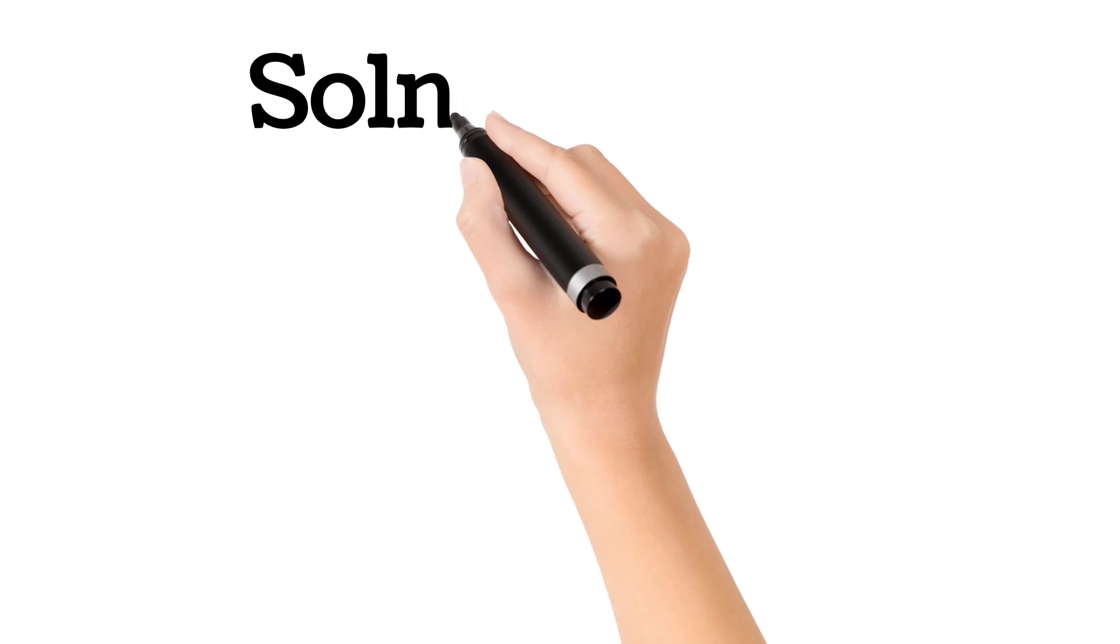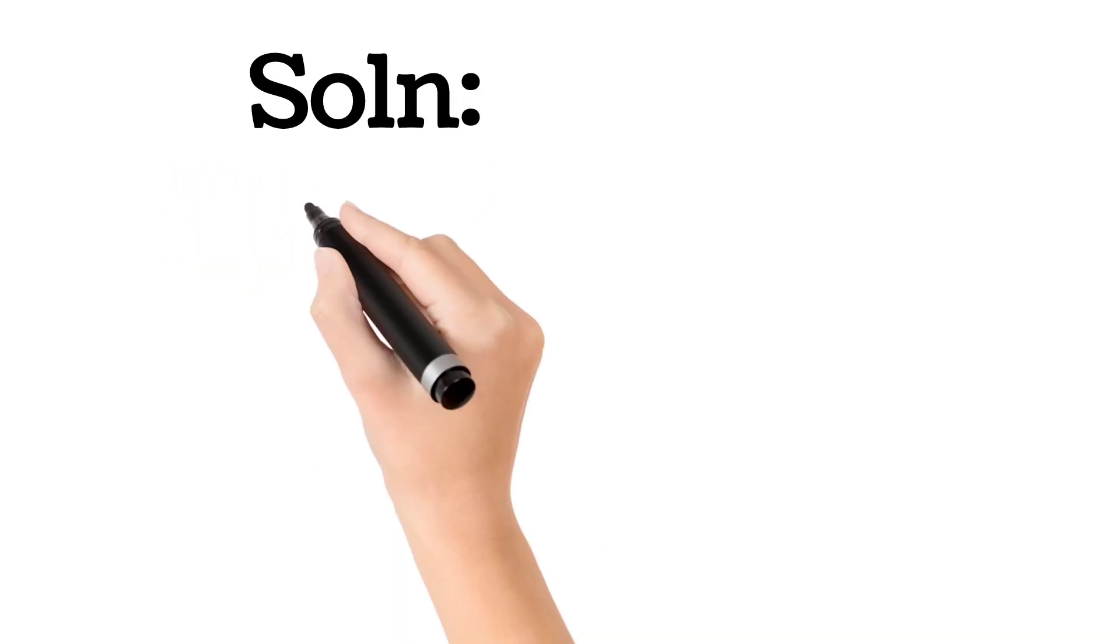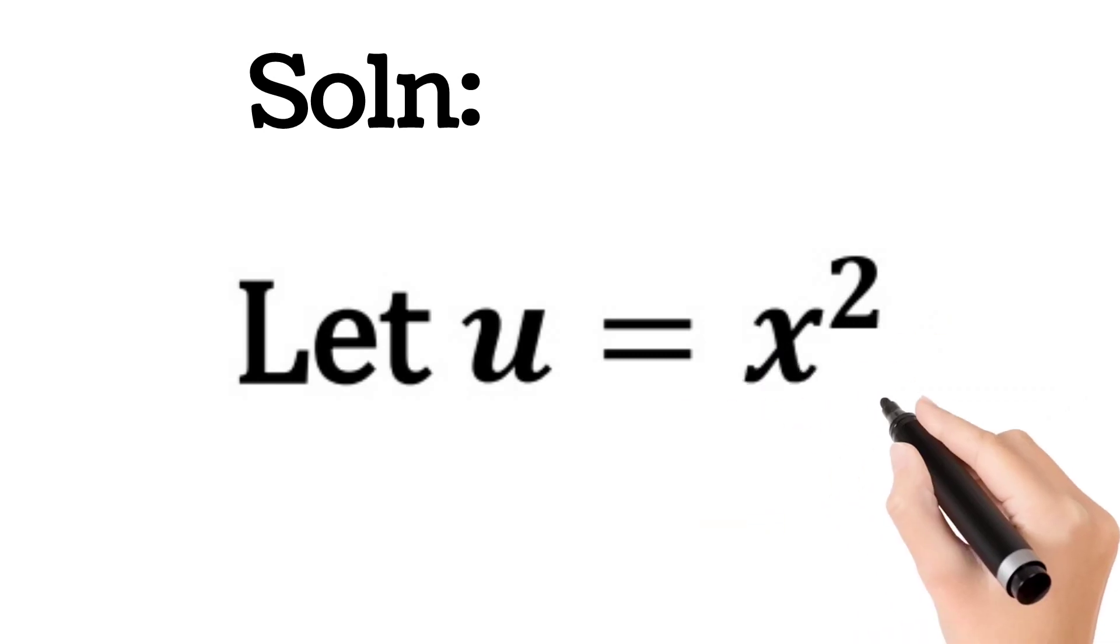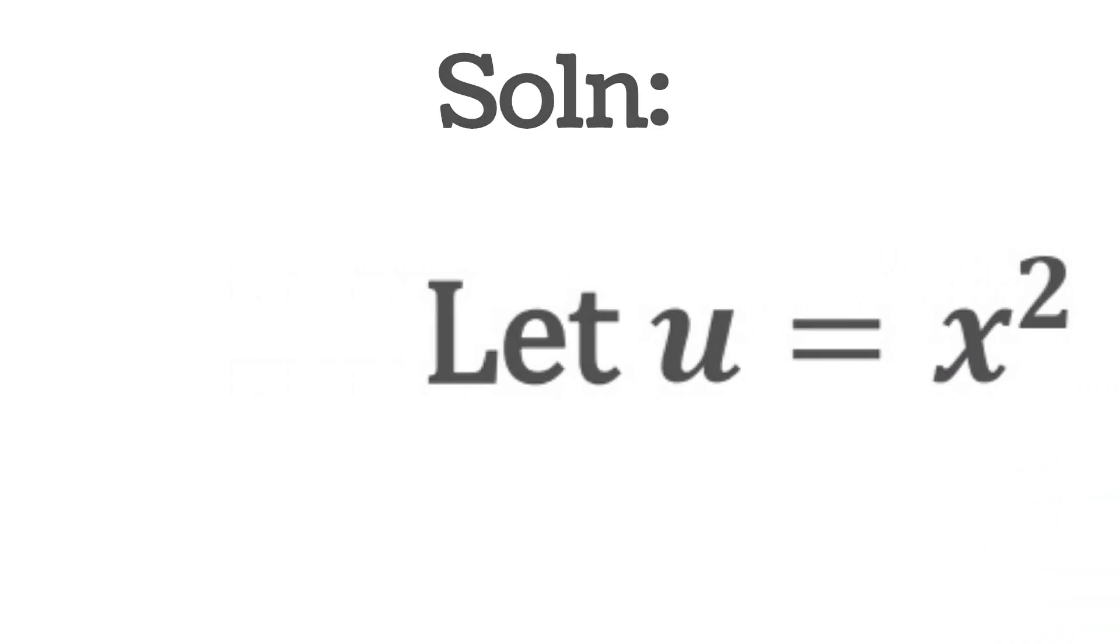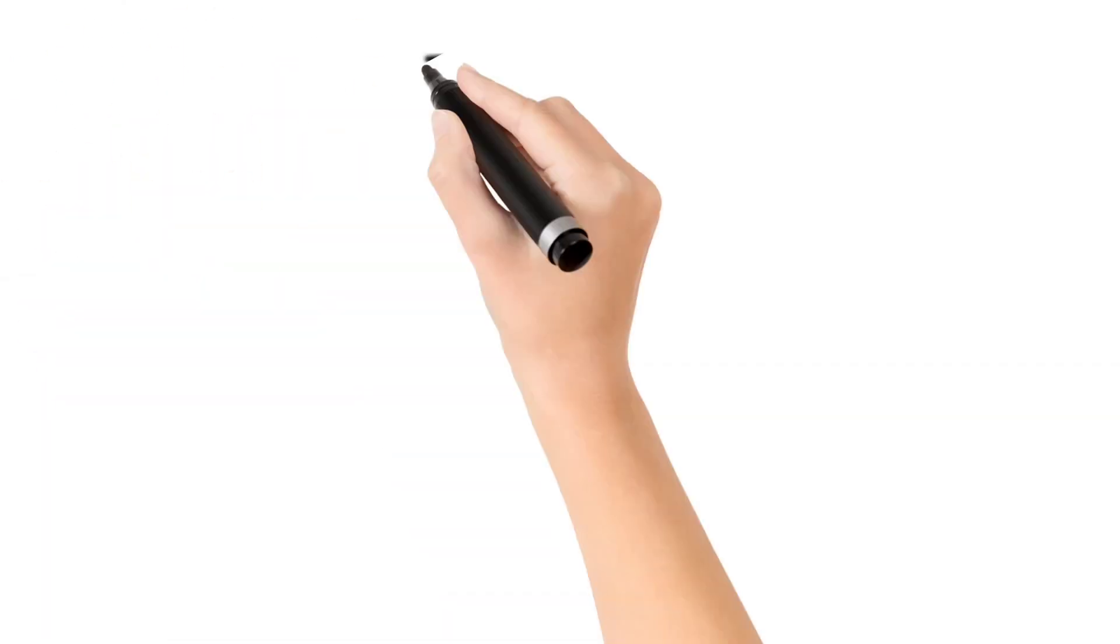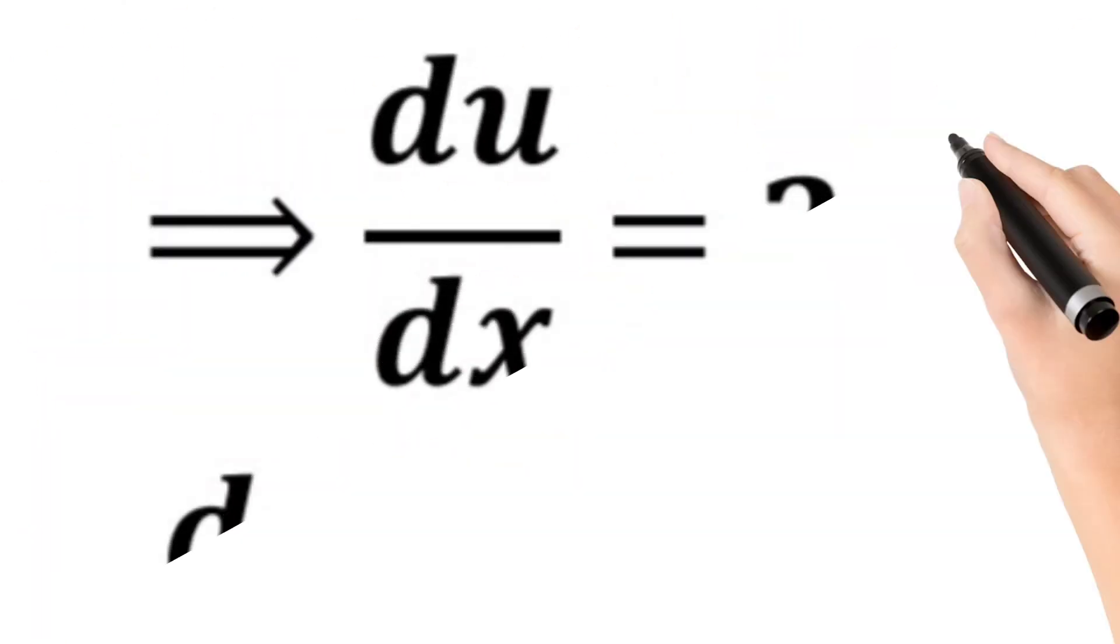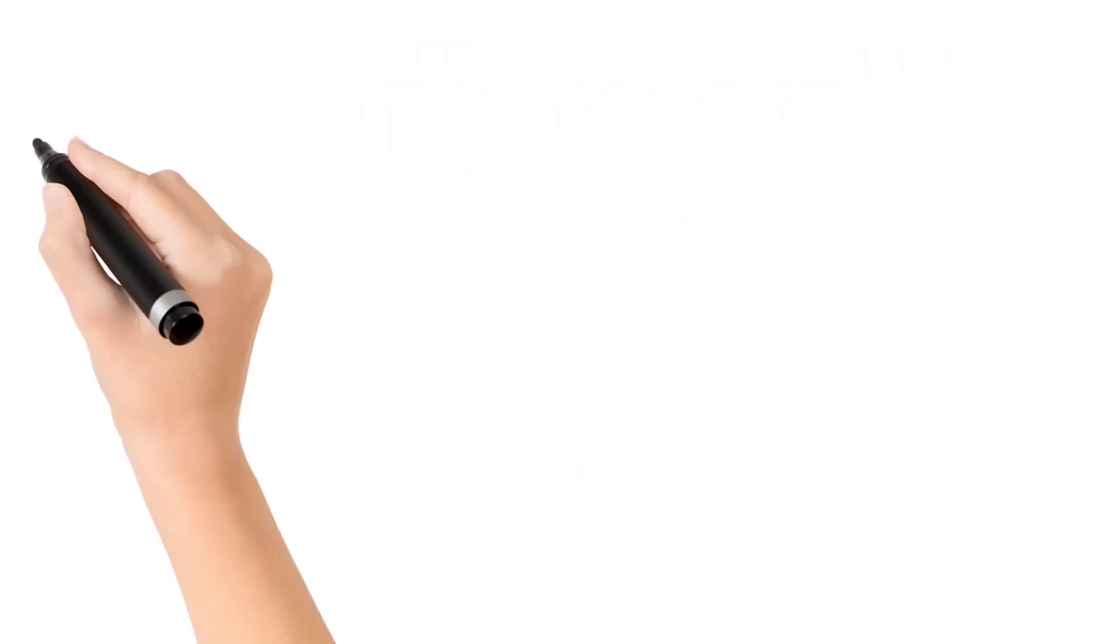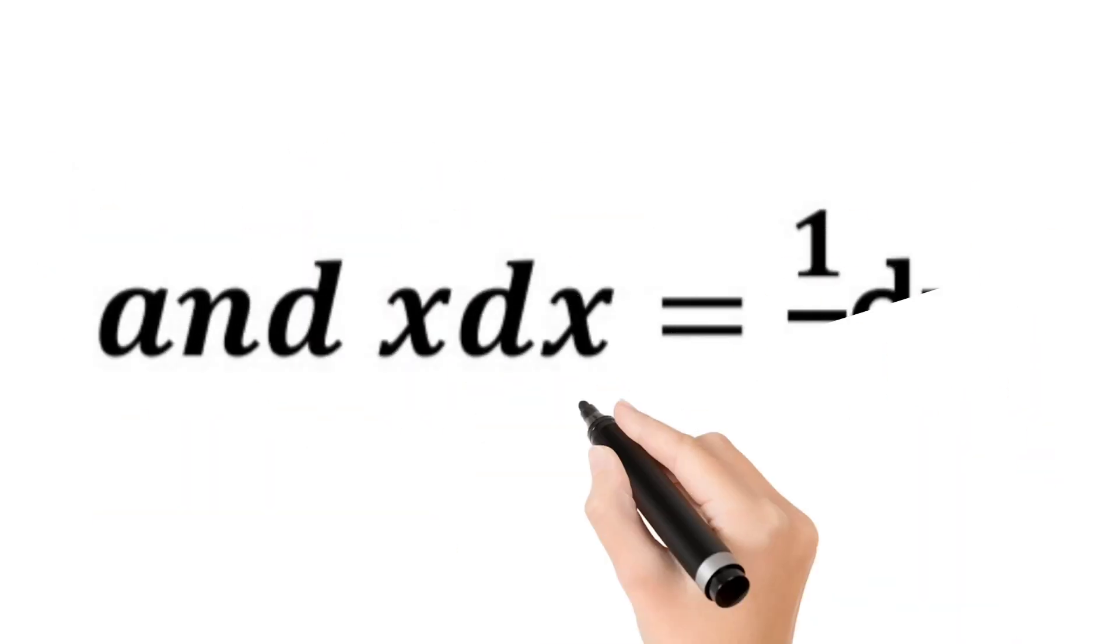Now let's solve that. Solution: We will make a substitution here. We will let u be equal to x². And then we differentiate u with respect to x to have du/dx is equal to 2x. That means du is equal to 2x dx, and x dx is equal to half du.